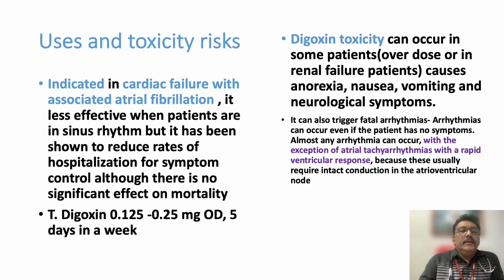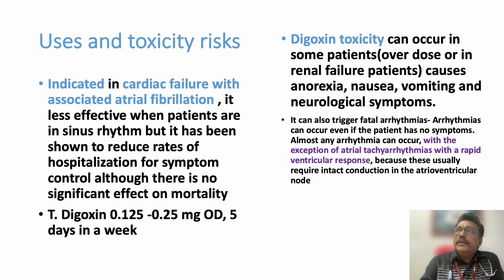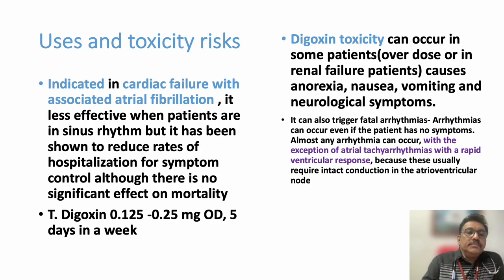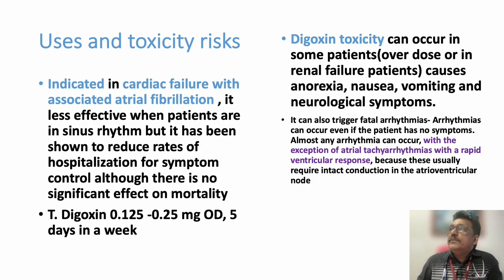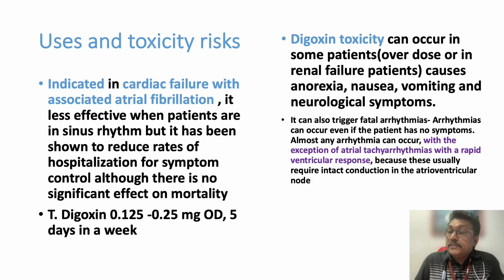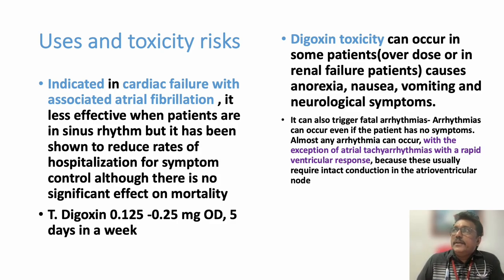Digoxin is indicated in cardiac failure with atrial fibrillation; previously it was used in various cardiac failures, but use is now restricted due to adverse effects. The dose is 0.125 to 0.25 milligram once daily, five days a week. In renal failure, the dose must be adjusted according to creatinine clearance, and after five days, a two-day drug holiday is given so that receptors return to normal.